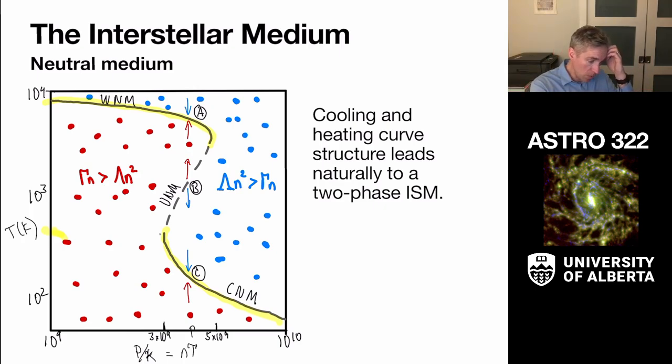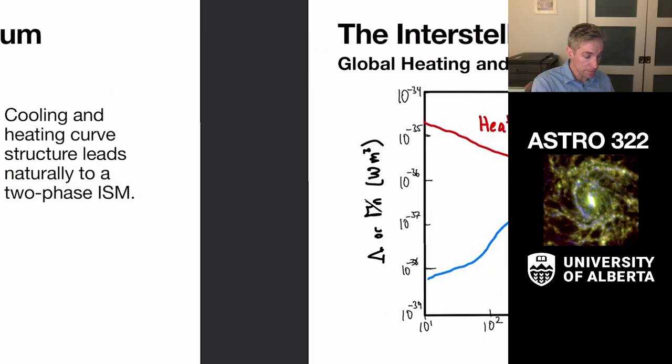and naturally have stuff kind of form into these cold clouds. Because if we cool to a certain point, that cooling is unstable and we end up going really cold and ultimately into this high pressure, low temperature phase where it can convert to molecular gas and ultimately form stars.